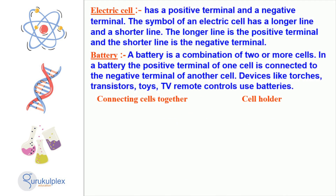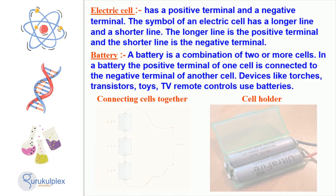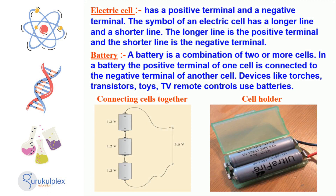Electric current refers to the flow of electric energy from one place to another. It is facilitated by an electric cell, which contains both a positive and a negative terminal. Batteries, which are composed of two or more cells, are generally used in households for devices such as torches, transistors, toys, and TV remote controls. To connect cells together, a secure cell holder is needed.